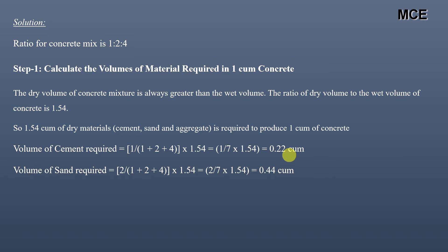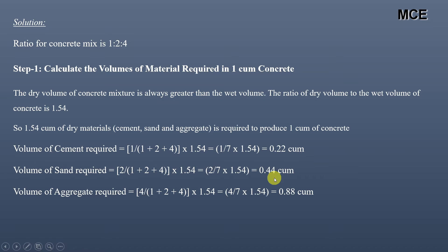Similarly, volume of sand = (2 ÷ (1+2+4)) × 1.54 = 2/7 × 1.54 = 0.44 cubic meters. Volume of aggregate = (4 ÷ (1+2+4)) × 1.54 = 4/7 × 1.54 = 0.88 cubic meters. These are the volumes of cement, sand, and aggregate required to make one cubic meter of wet concrete.